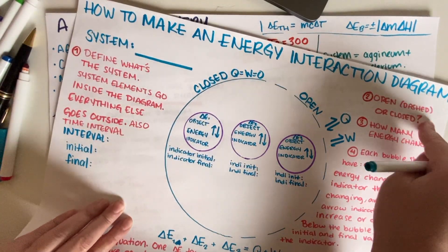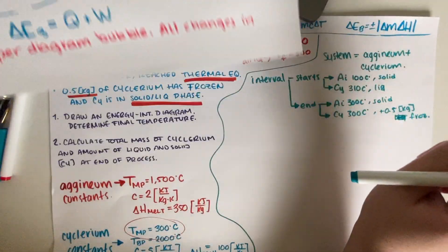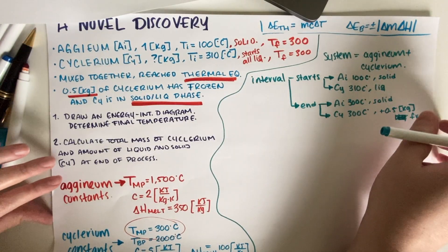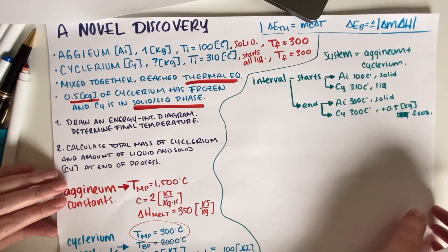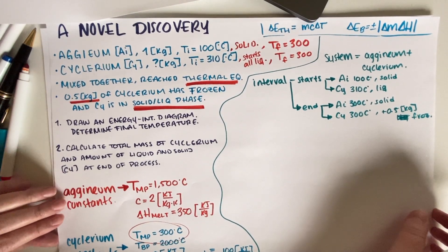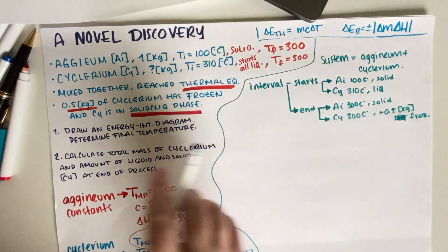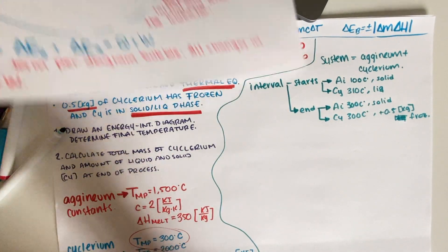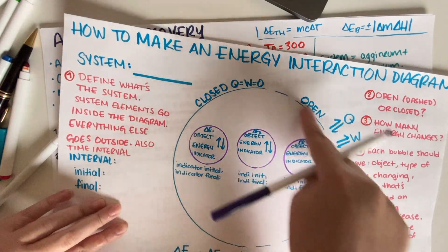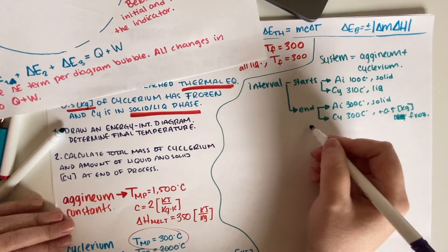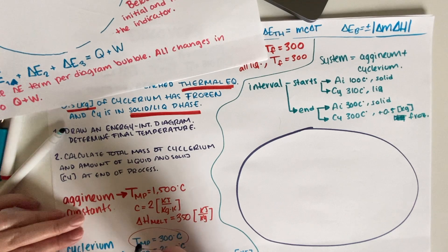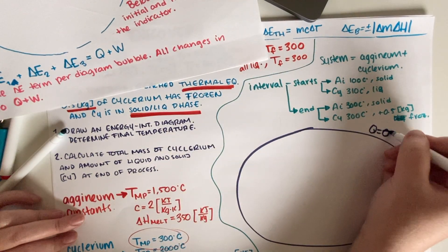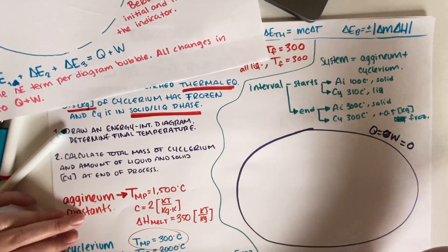Next, we determine if the system is open or closed. The problem states it was thermally insulated, so there is no heat or work going in or out. That means we draw a solid line circle — solid for closed, dashed for open. Closed means Q equals W equals zero; no energy going in or out.